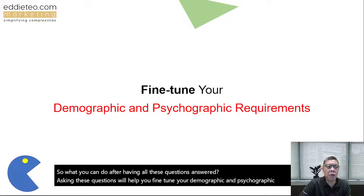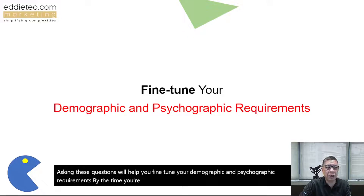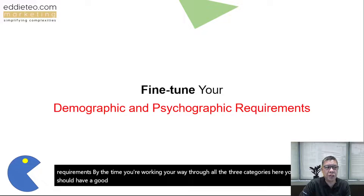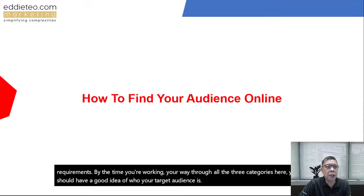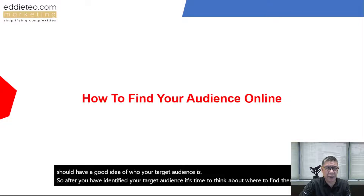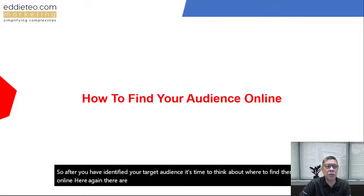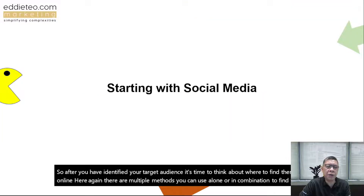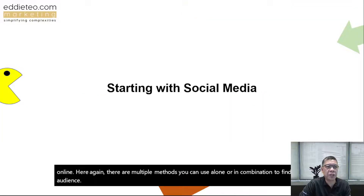By the time you have worked through all three categories, you should have a good idea of who your target audience is. After identifying your target audience, it's time to think about where to find them online. There are multiple methods you can use alone or in combination, but normally we'll start with social media. Marketing has become so much easier compared to traditional media formats.